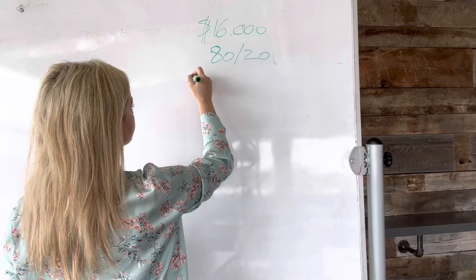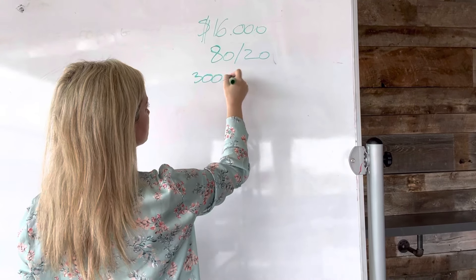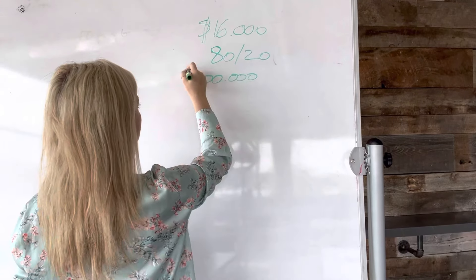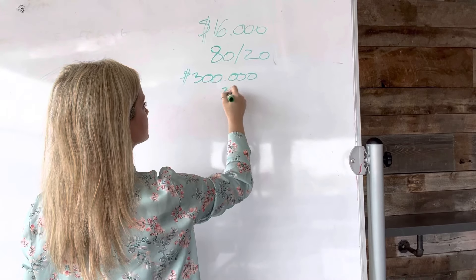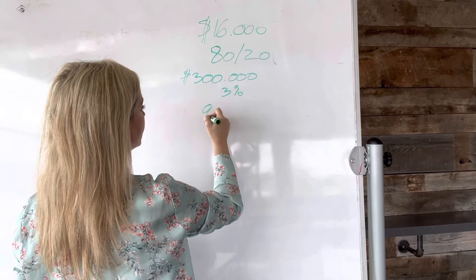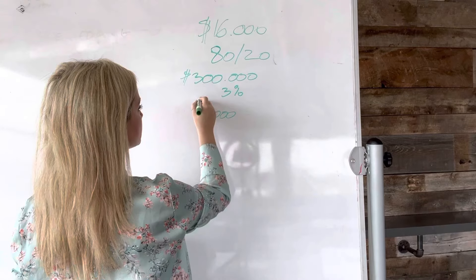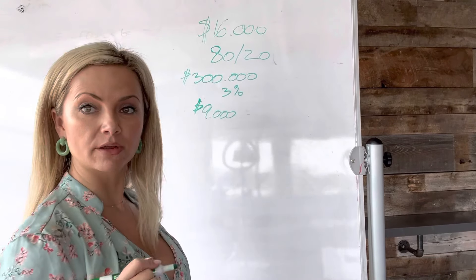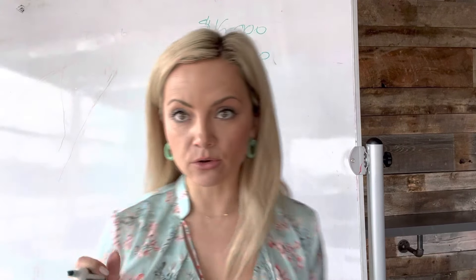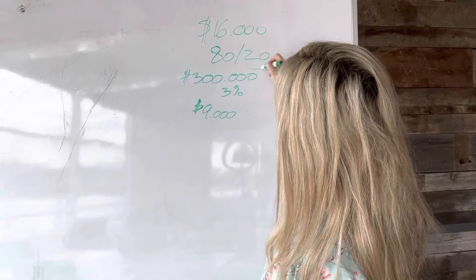So let's say it's a $300,000 house and you collected a 3% commission, which gives you $9,000. So with the $9,000, that's the full commission. Out of the full commission, now you're going to have to pay 20% to the broker.